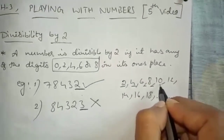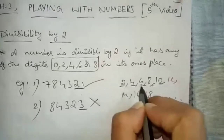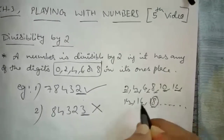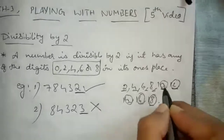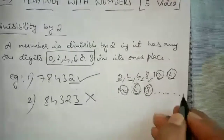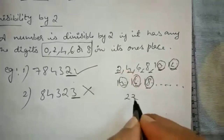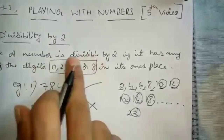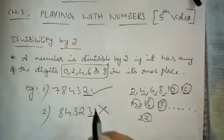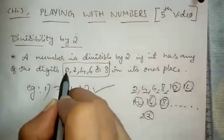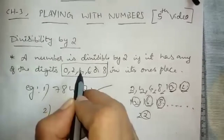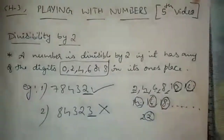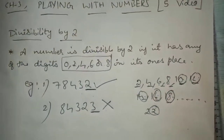In the units place of multiples of 2, you get 0, 2, 4, 6, 8 — and then the pattern repeats: 2, 4, 6, 8, 0 again. So in all multiples of 2, the units place always has one of these five digits: 0, 2, 4, 6, or 8. If any of these five numbers appears at the units place, you can say that the number is divisible by 2.